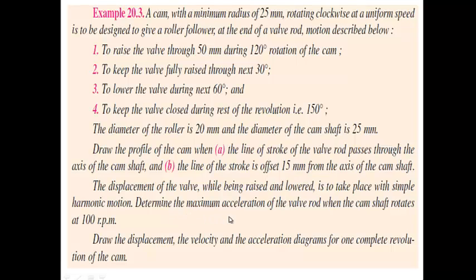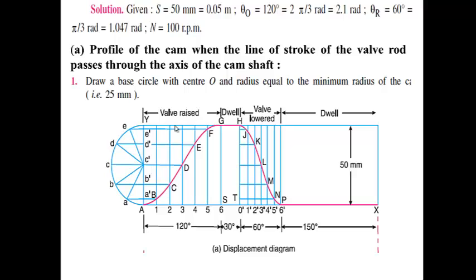We also determine the maximum velocity and acceleration when the cam rotates at 100 rpm. We have to draw the displacement, velocity, and acceleration diagram for one complete revolution of the cam. In the very first case we have to draw the displacement versus theta plot. The process is the same as discussed earlier. We choose any arbitrary point A and from here we draw a horizontal line AX of any convenient length, suppose 14cm.